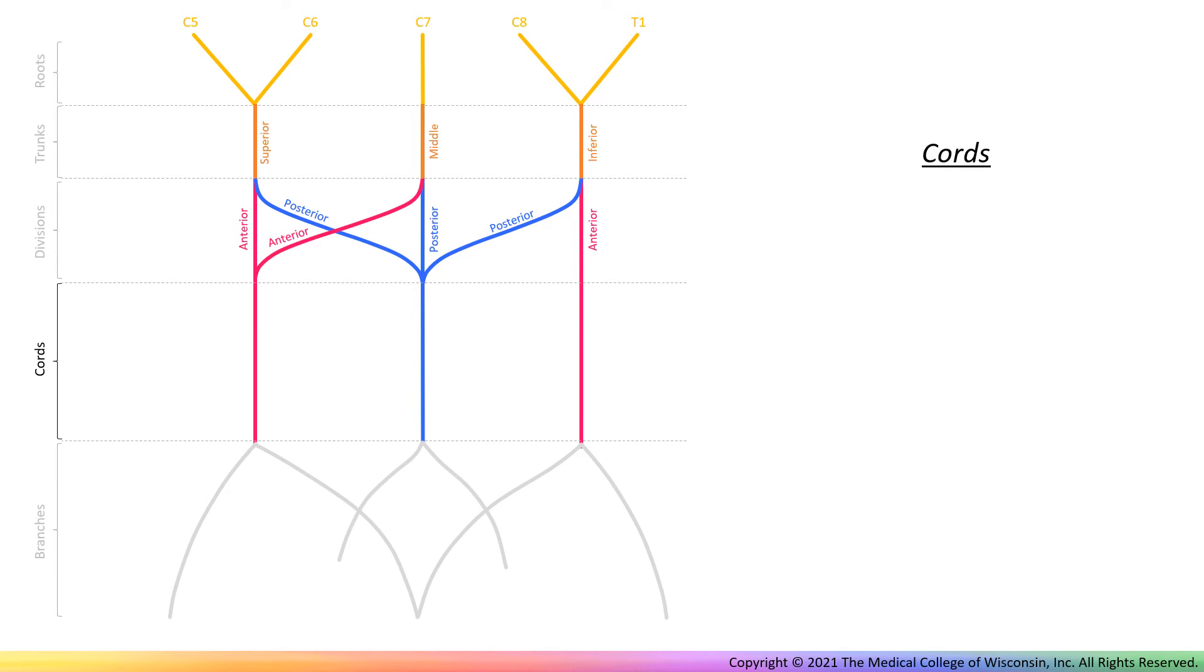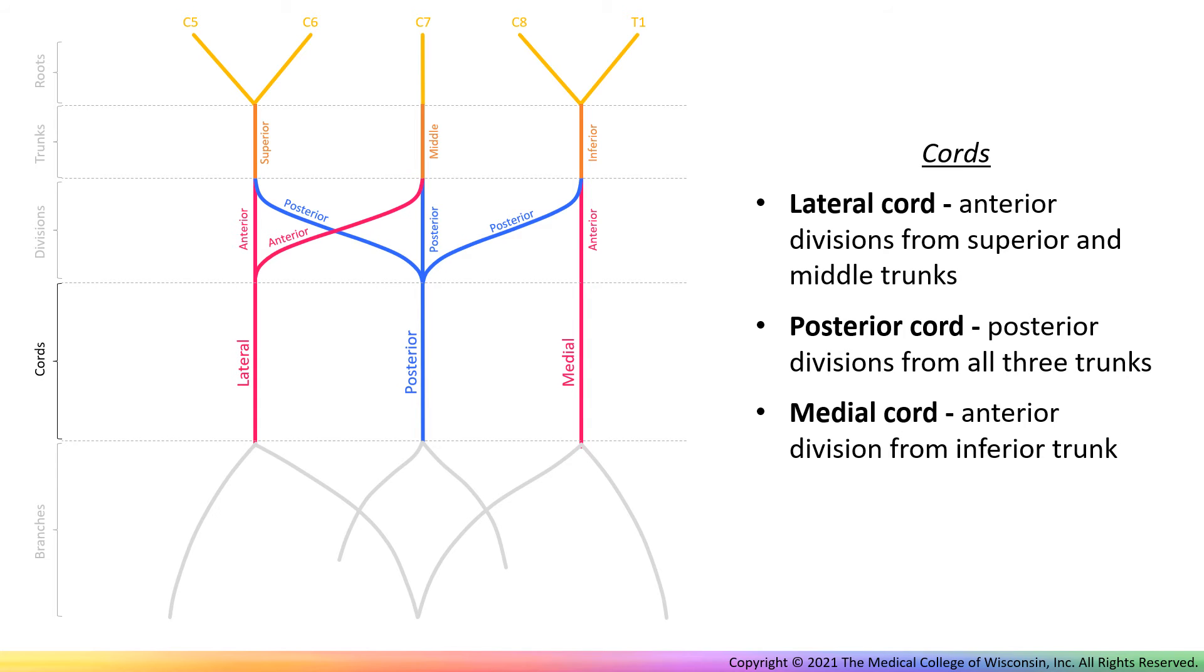Divisions then become cords, including the lateral, medial, and posterior cords. The posterior cord is formed when all three posterior divisions merge with one another. Cords can be located in lab by using the axillary artery as a landmark, since these cords are named for their relationship to this vessel.